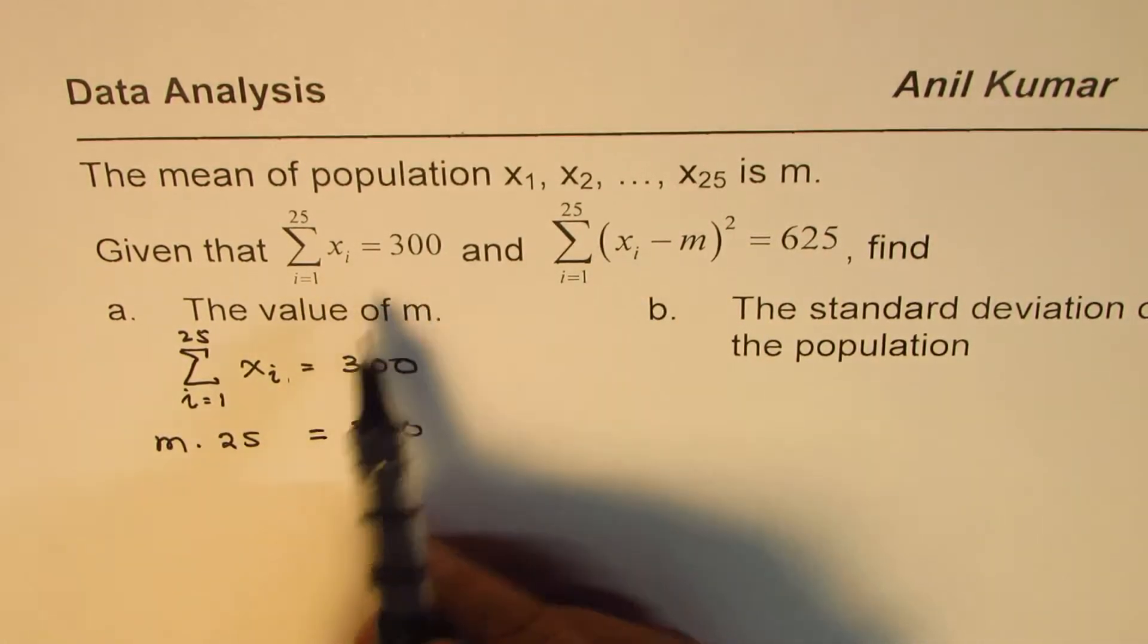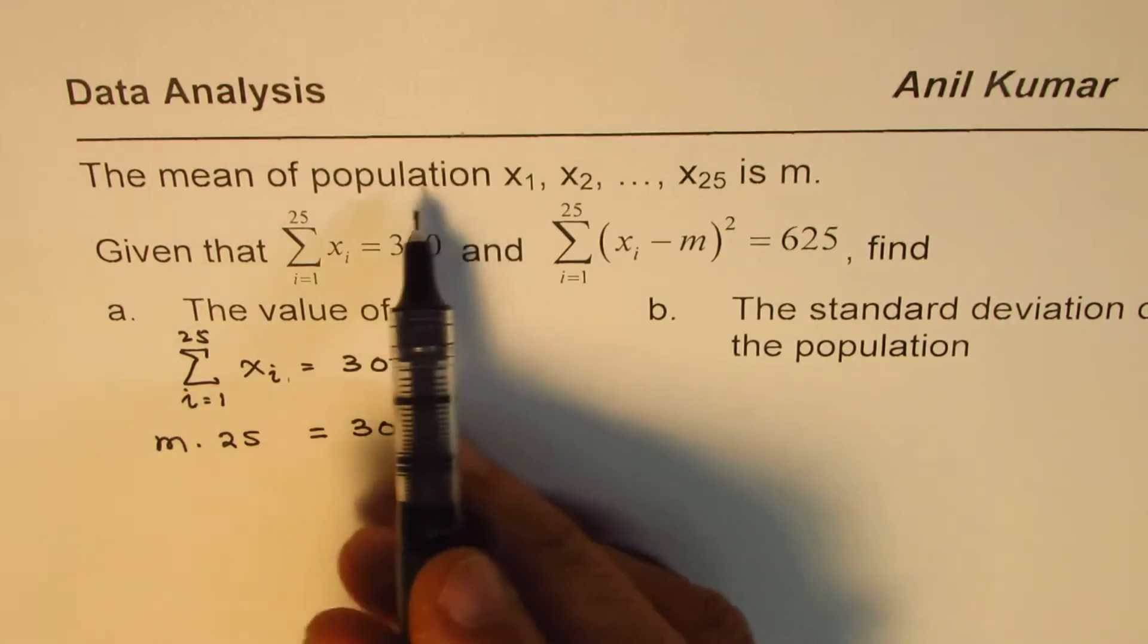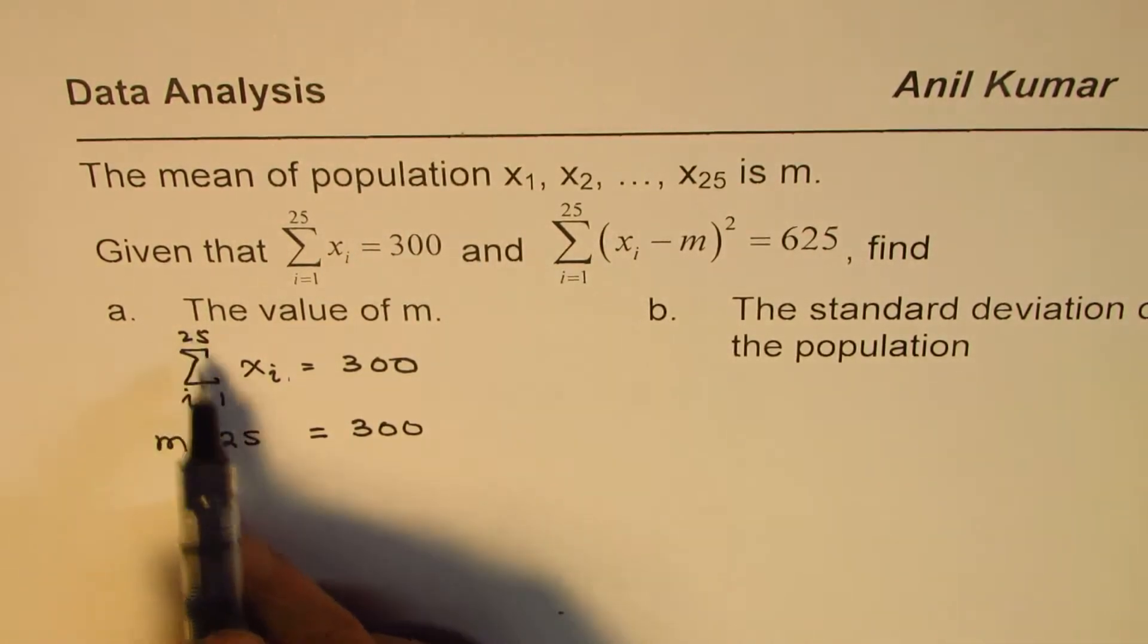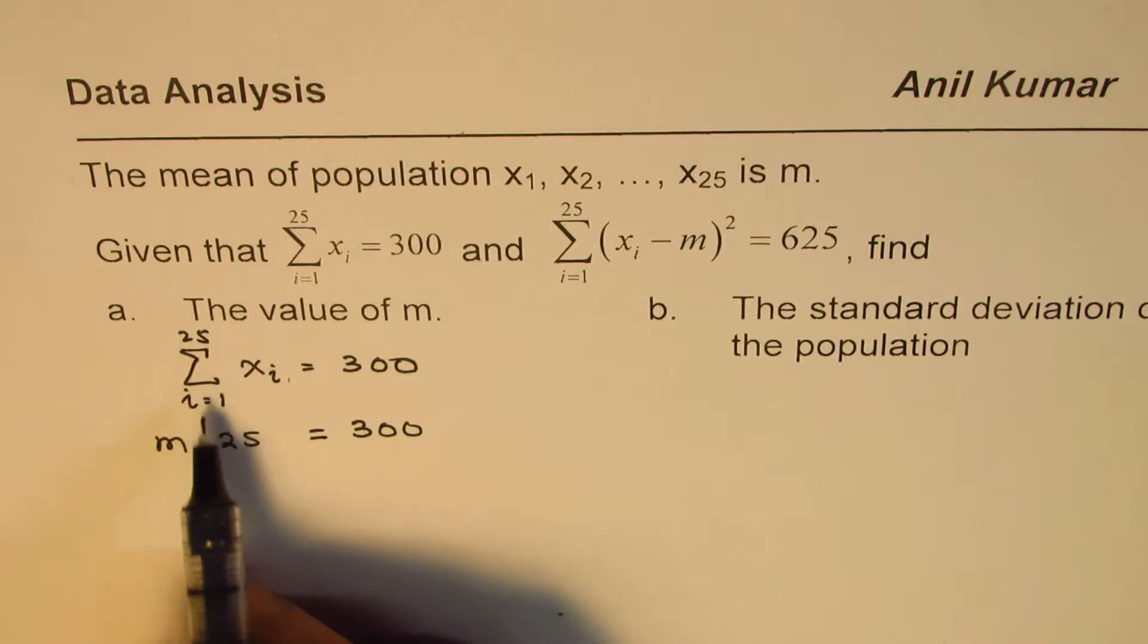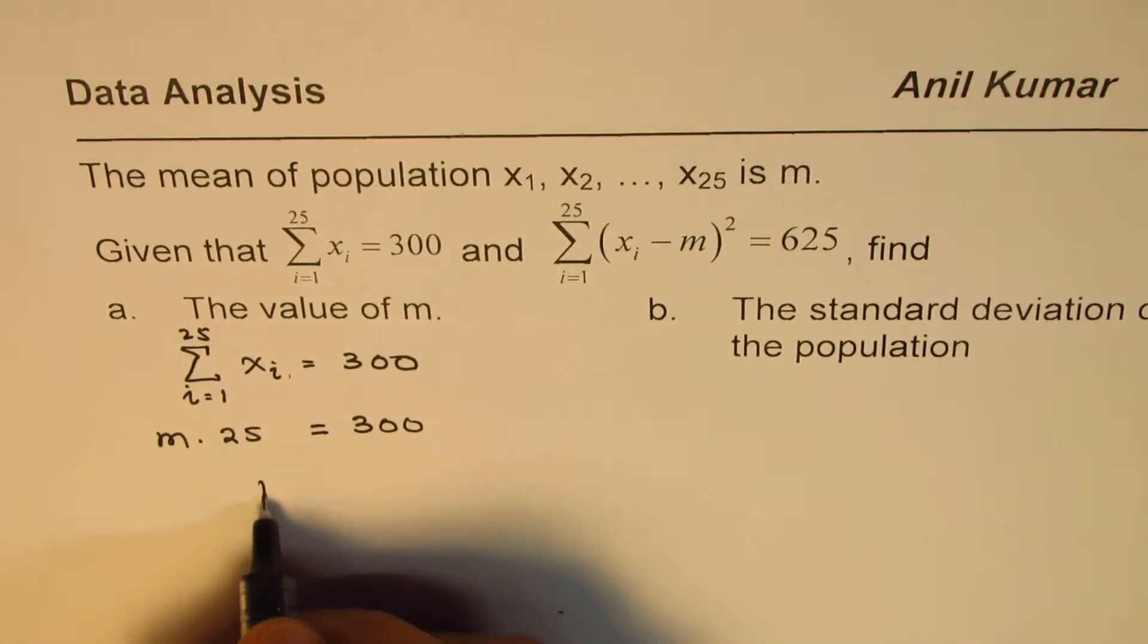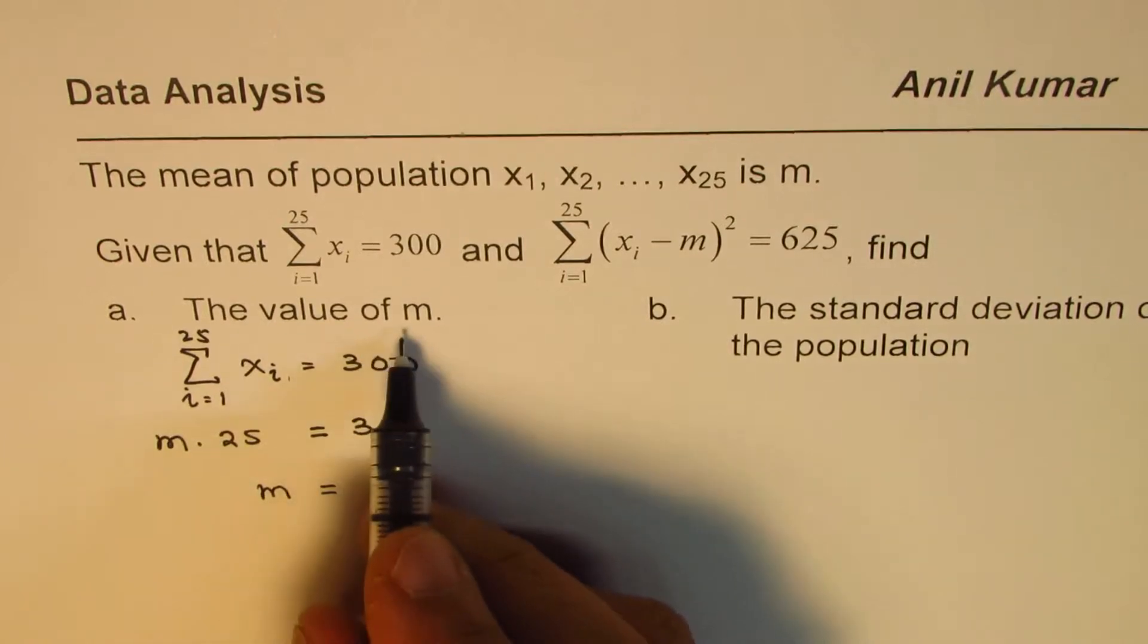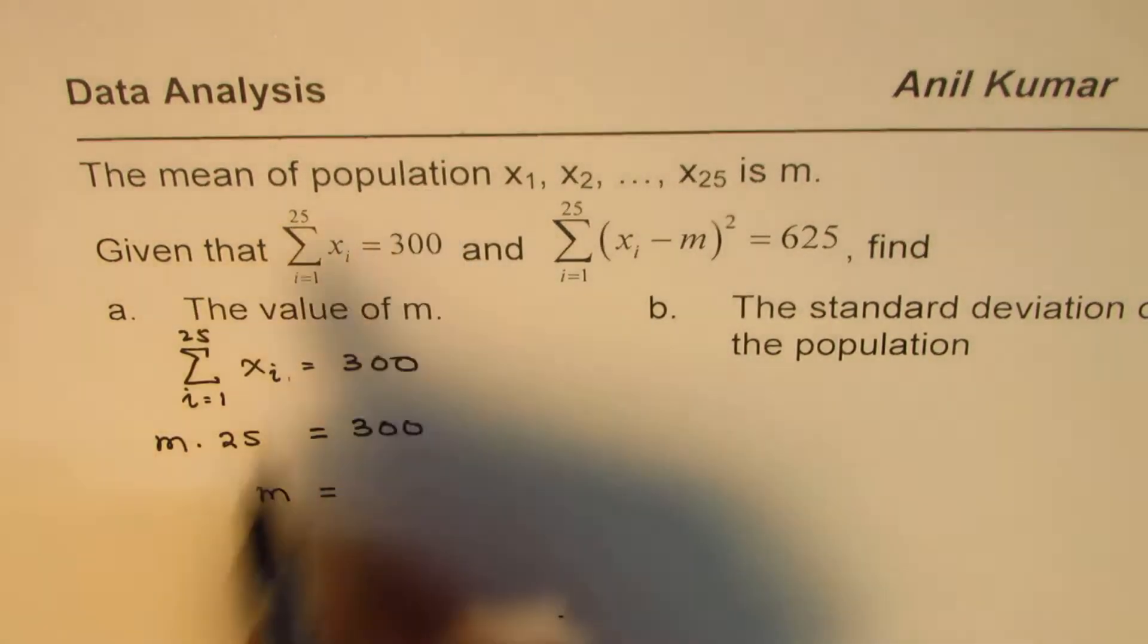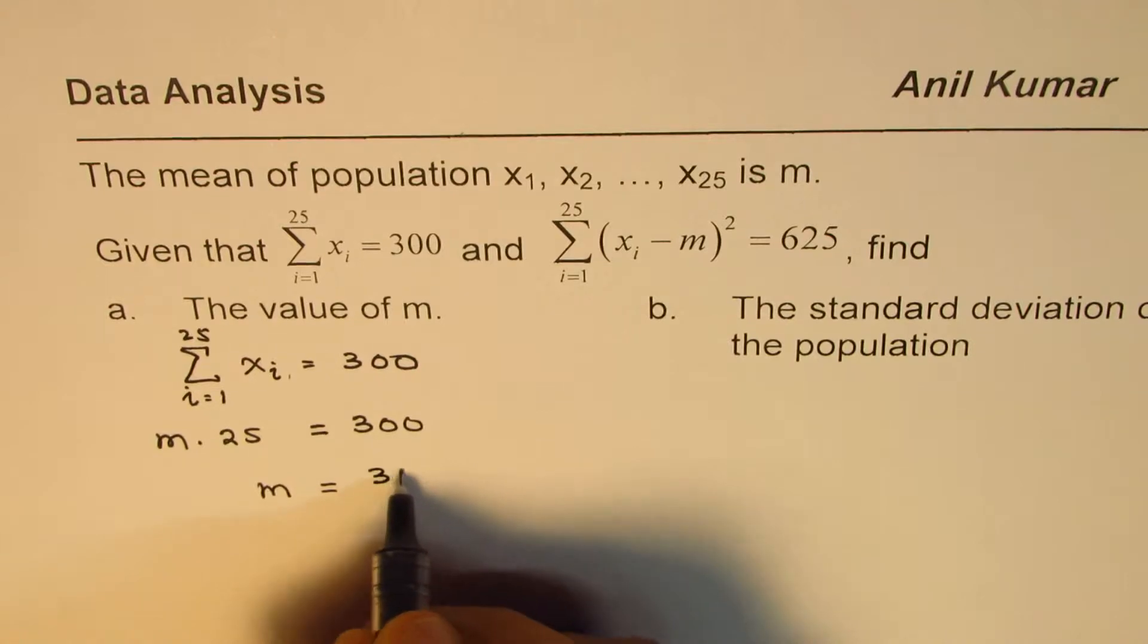So from here we can find what m is. The mean of the population should be 300 divided by 25.